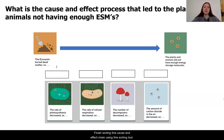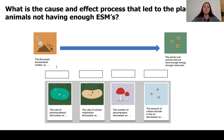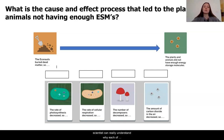After you finish sorting this cause and effect chain using this sorting tool, I want you to go ahead and write a recommendation to the biosphere. What exactly went wrong? Remember to include detail in your response so that the scientists can really understand why each of these steps matter.